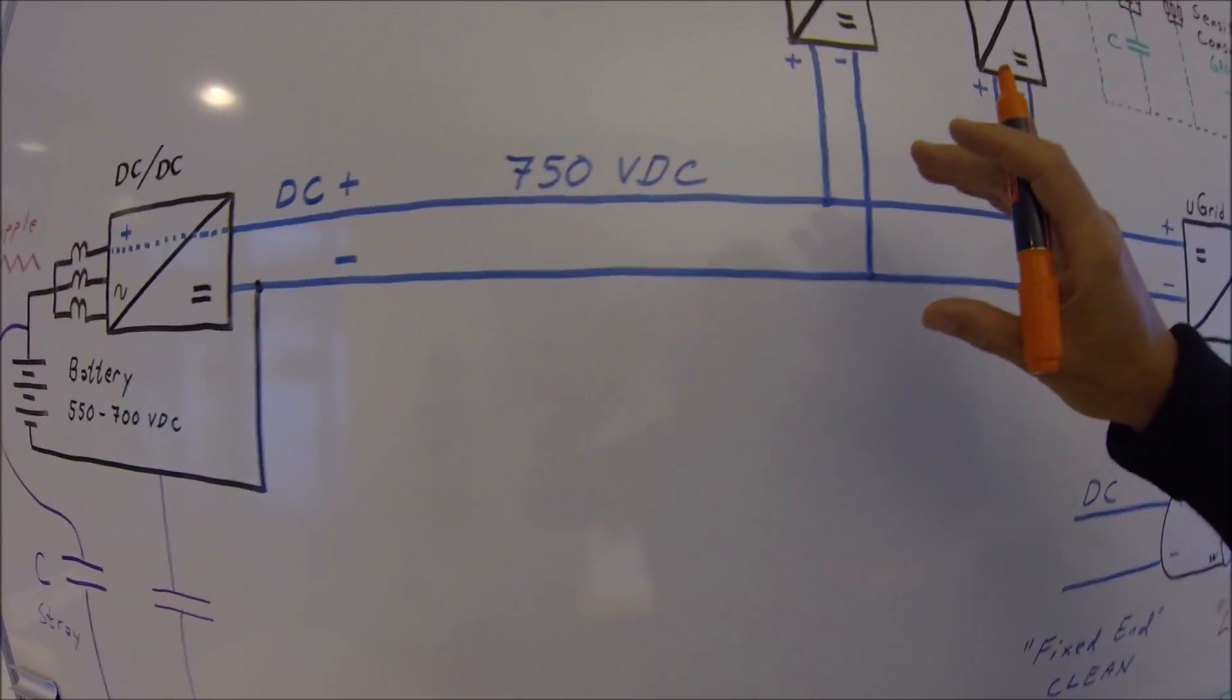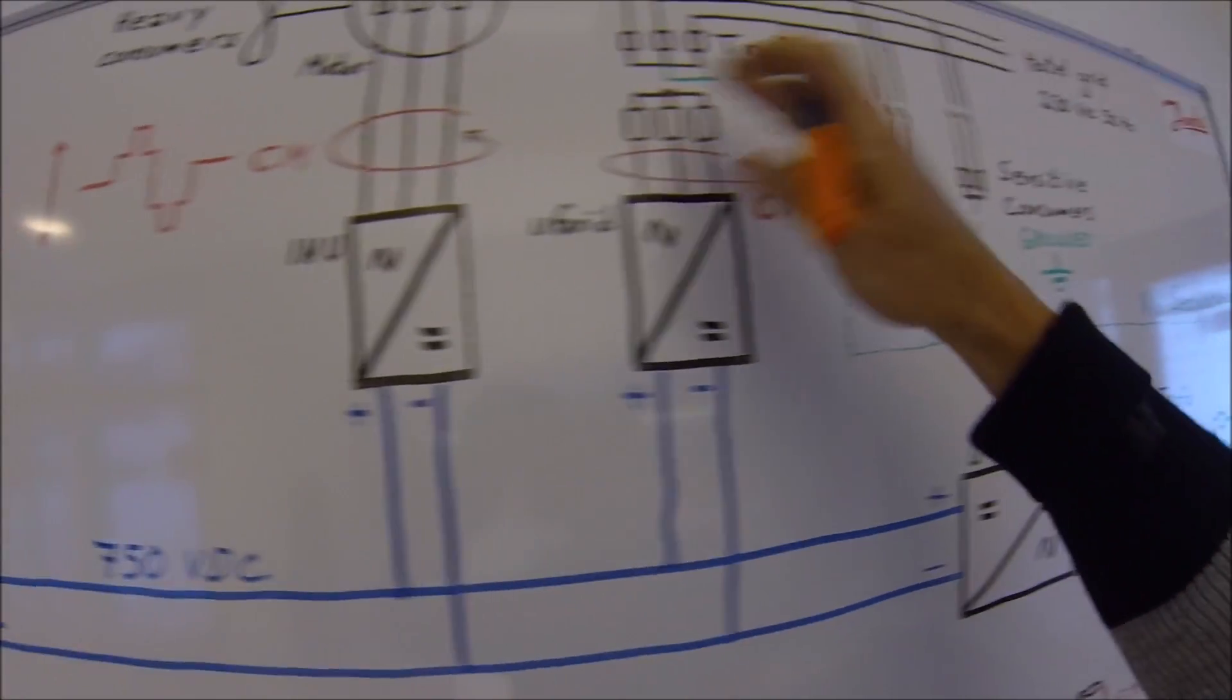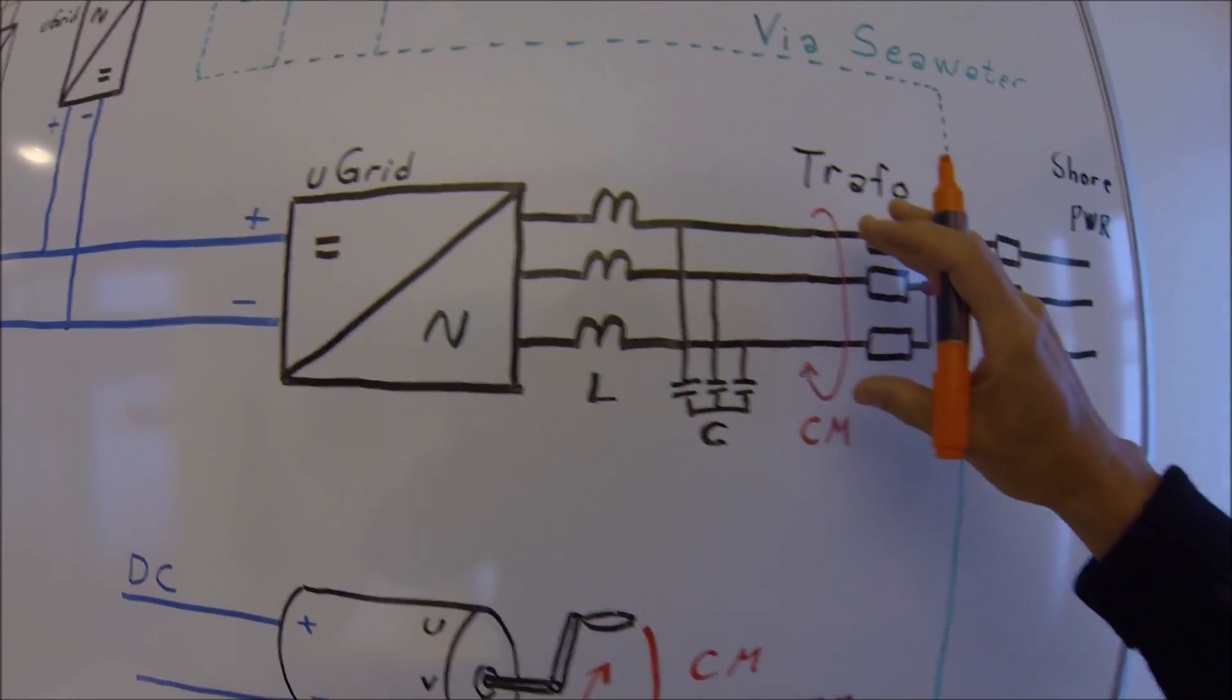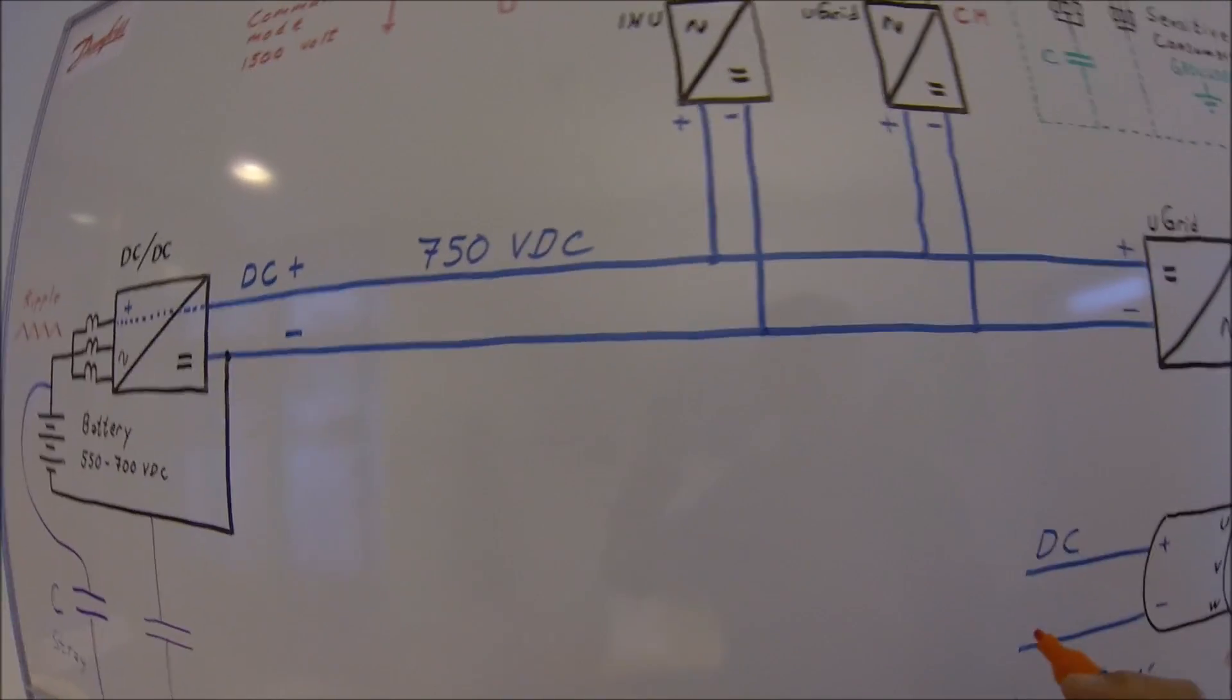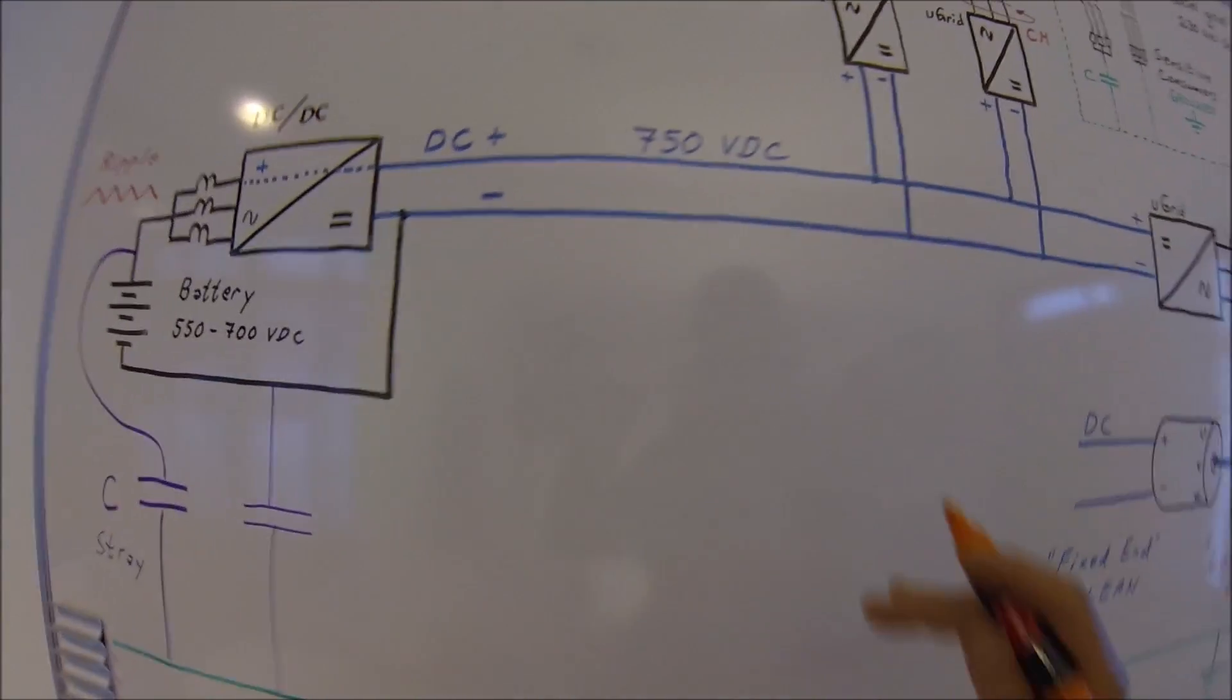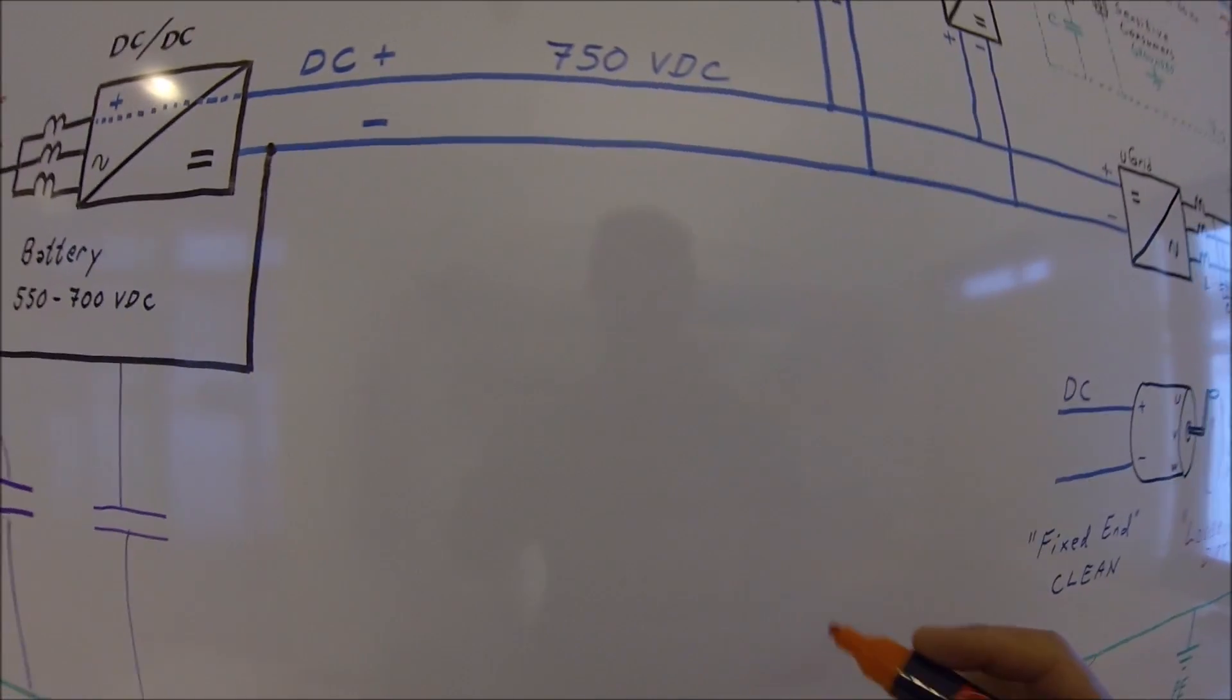How can we make sure that none of this common mode going on on the AC side will transfer into the DC side? We have to make a ballasting of our DC bus.